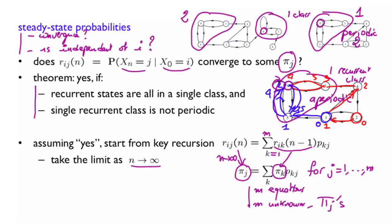So this is a system of m equations with m unknowns. Unfortunately, this system is singular and has multiple solutions. And one way to see that is the solution pi_j equals 0 for all j is a valid solution to this system, 0 equals 0. So clearly, this is not very informative.